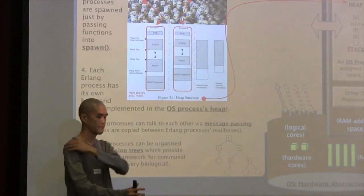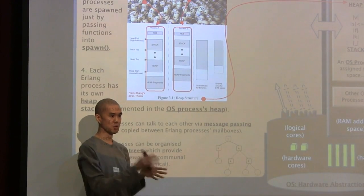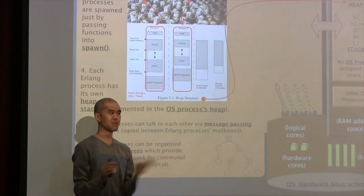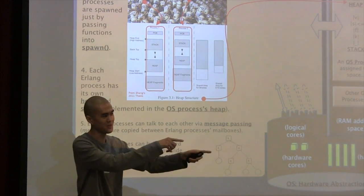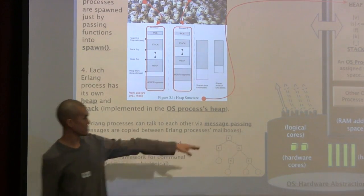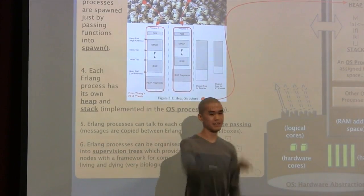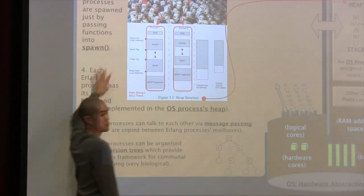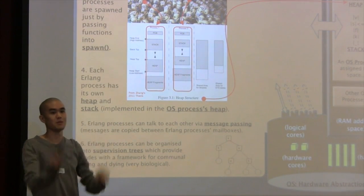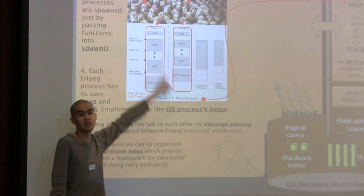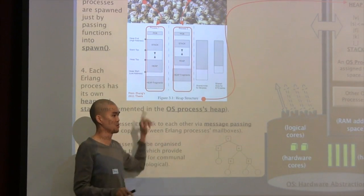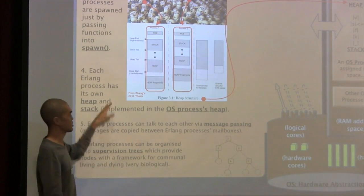Have you ever tried getting Word to talk to Excel? Why is it funny? I don't know. Here's the thing. Processors at the operating system level, they can talk to each other. It's a bit complicated. Now, inside the Erlang virtual machine, these hundreds of thousands of processes can talk to each other simply by message passing. Remember, each of the processes have their own memory. So when they talk to each other, the hardware just copies and pastes the messages in between their mailboxes. That's it. They talk to each other really fast.